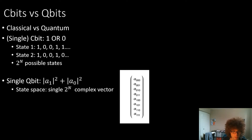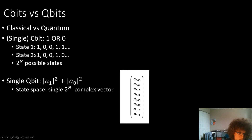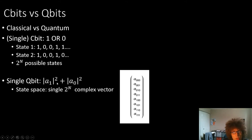For a classical bit, we can only represent each bit as a one or zero, so we represent a state as something like one, zero, zero, one, one. We have two-to-the-n possible states. In contrast, instead of either a one or zero, we represent a qubit as a vector — a system of qubits as a vector consisting of superpositions or additions of its components.